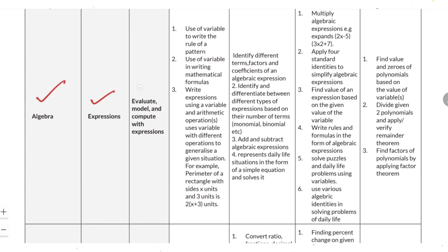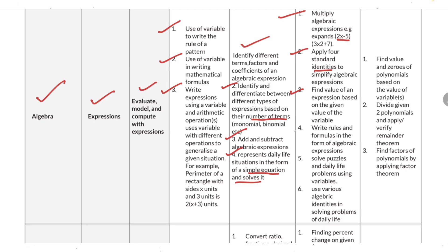Next is algebra with expressions. You need to evaluate, model, and compute with expressions. Topics include: using variables to write rules of patterns; using variables in mathematical formulas; writing expressions using variables and arithmetic operations; identifying different terms, factors, and coefficients of algebraic expressions; differentiating between types of expressions based on their number of terms; adding and subtracting algebraic expressions; representing daily life situations in simple equations; multiplying algebraic expressions like (2x−5)(3x+7); applying four standard identities to simplify expressions; finding values of expressions; using various algebraic identities in daily life problems; finding values and zeros of polynomials; dividing two polynomials; and finding factors of polynomials by applying the factor theorem.